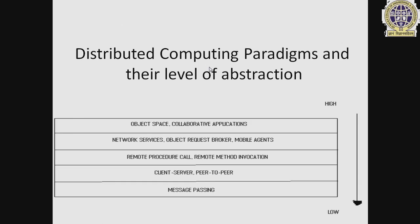Distributed computing has different levels of abstraction, from high to low. Number one: object-oriented and creative applications. Number two: network services, object reporting programs, and mobile engineering. Number three: remote procedure call and remote method invocation. Number four: client-server and peer-to-peer. Number five: message passing. These represent the abstractions for distributed computing paradigms.